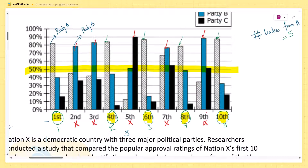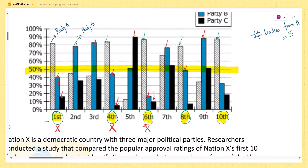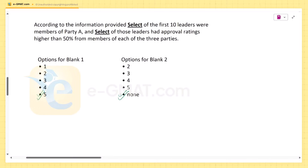Checking each of the five Party A leaders: for the first one, two of the three bars are less than 50%, so no. For the second one, two bars are less than 50%, so no. For the third, the other two ratings are less than 50%, so no. For the fourth, it's close to 50% but less, so no. For the fifth, the other two parties' ratings are less than 50%, so no. None of the five leaders had approval ratings greater than 50% from all three parties. The correct answer is none.